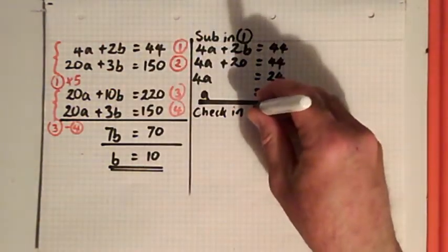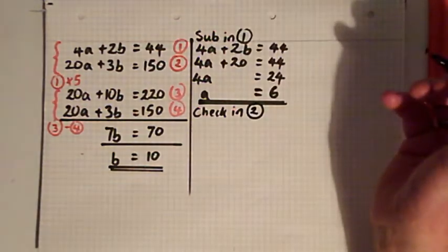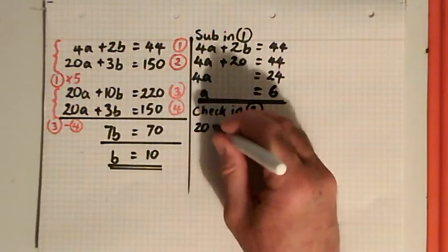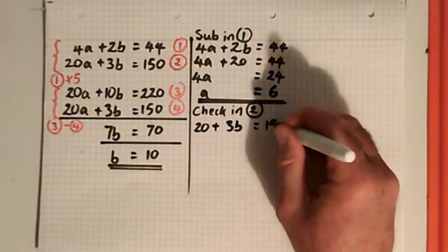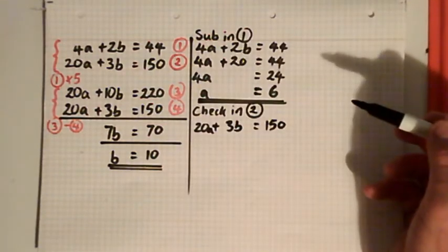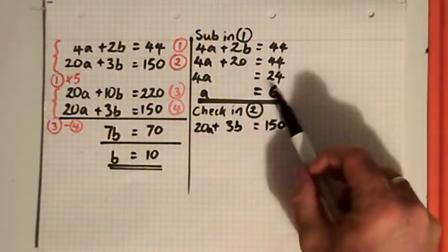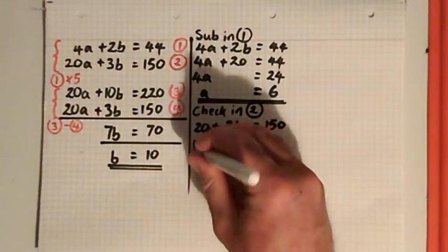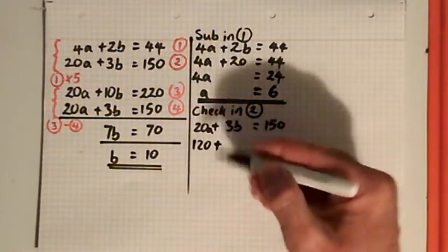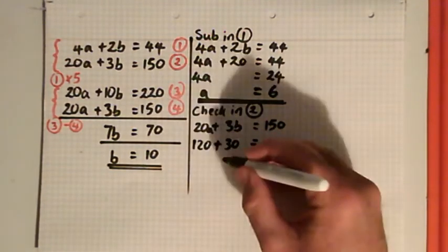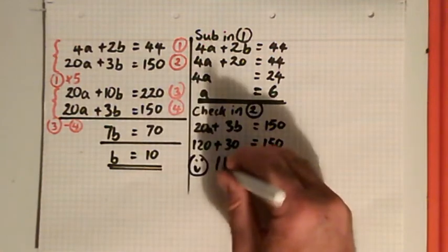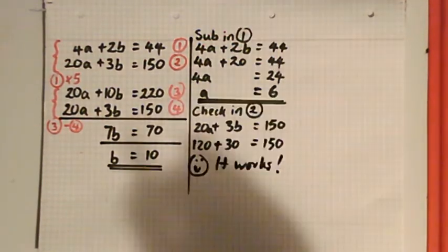So let me use equation 2: 20a + 3b = 150. I figured out that a was 6, so 20 times 6 is 120. I figured out that b was 10, so 3b is 30. So 120 + 30 = 150. So we know that we've got that right.